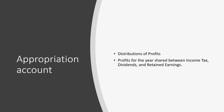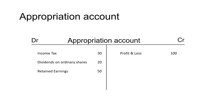The appropriation account is used to distribute profits for the year between income tax for the year, dividends declared, and the balance goes to retained earnings. The appropriation account has the profit for the year on the credit side. Income tax and ordinary share dividends are closed off to this account on the debit side. The balancing figure goes to retained earnings. This shows that the company's profits for the year are divided into three portions: income tax expense, dividends declared, and the balance kept in retained earnings.